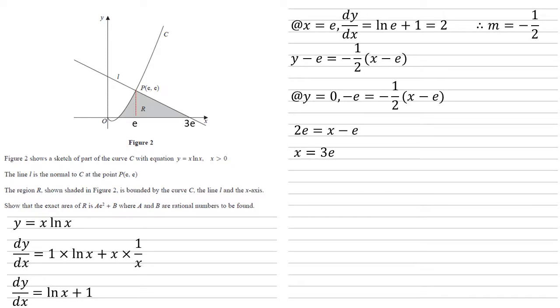We've now got everything we need to work out the area. So the area of the right-hand side is equal to a half times the length of the bottom, which is 3e minus e, times by the height, which is e. So we get an area of e squared.